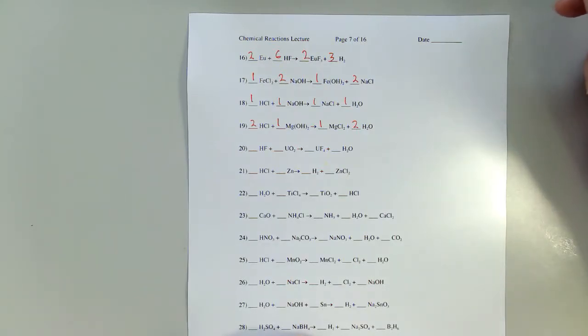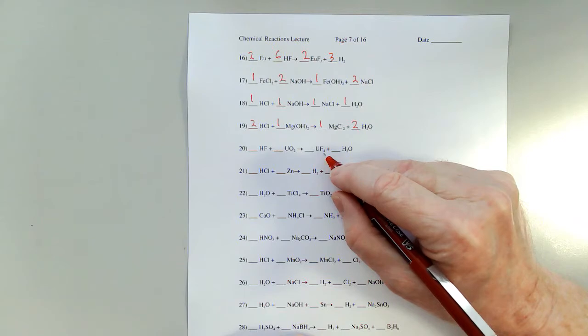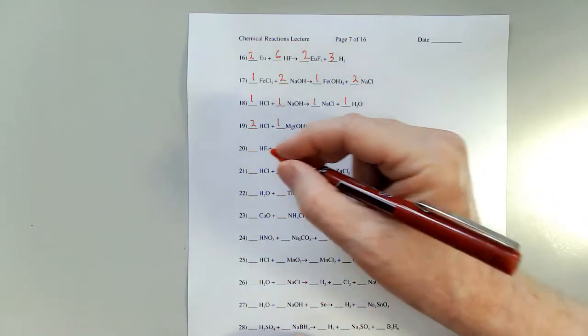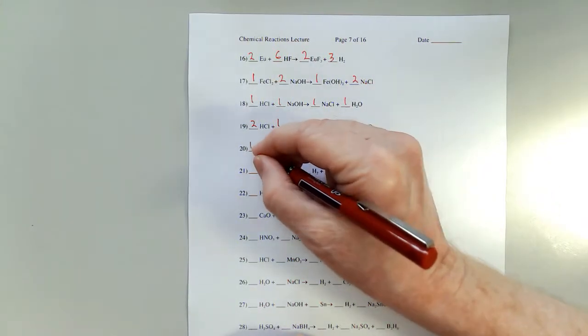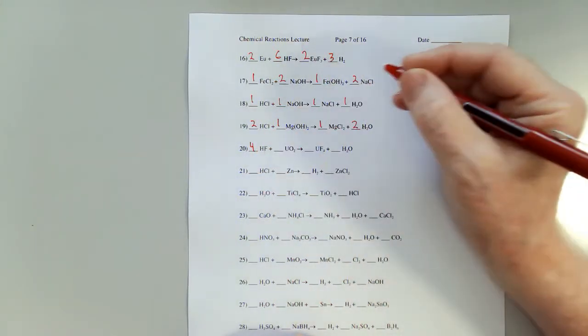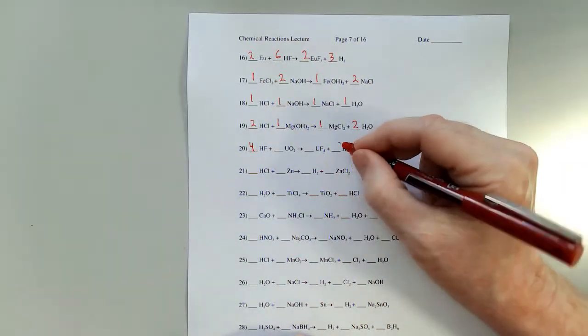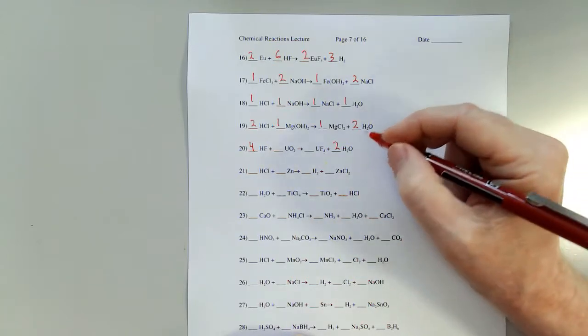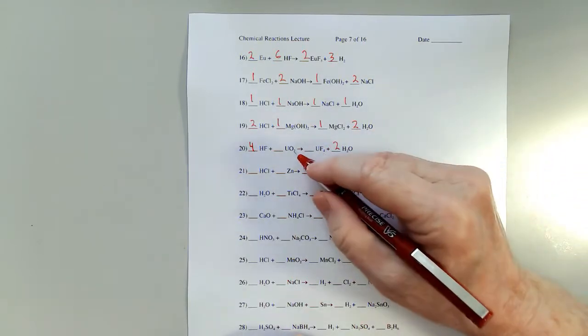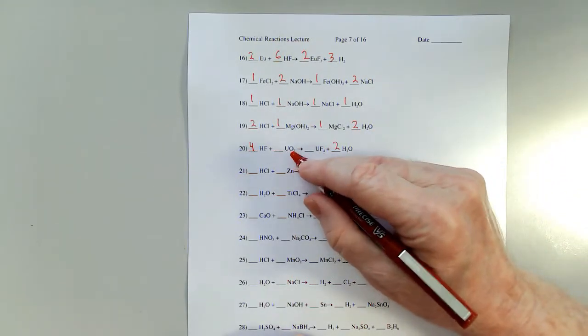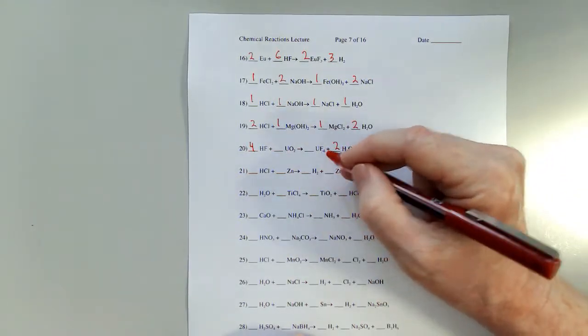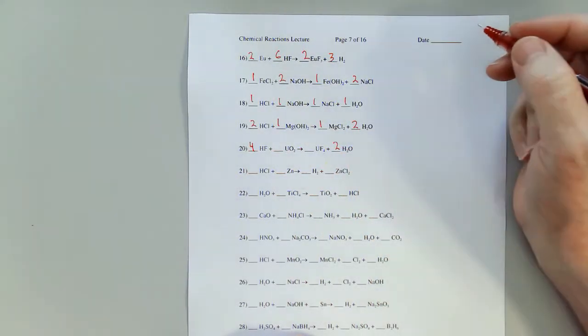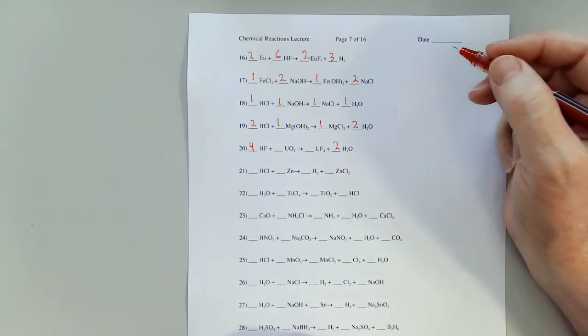In number 20, four fluorines — so I'm going to need to put a four there. Four hydrogens, so I'm going to have to put a two there. Two oxygens, two oxygens, one uranium, one uranium. I'm in good shape there.